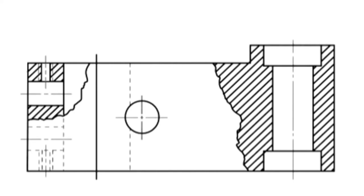Broken out sections are used to show the interior details of a specific feature of the object. A small portion of the part is sectioned to show interior details. A freehand brake line is used in lieu of a cutting plane line to indicate a broken out section. Typically, hidden lines are omitted from the broken out section view.